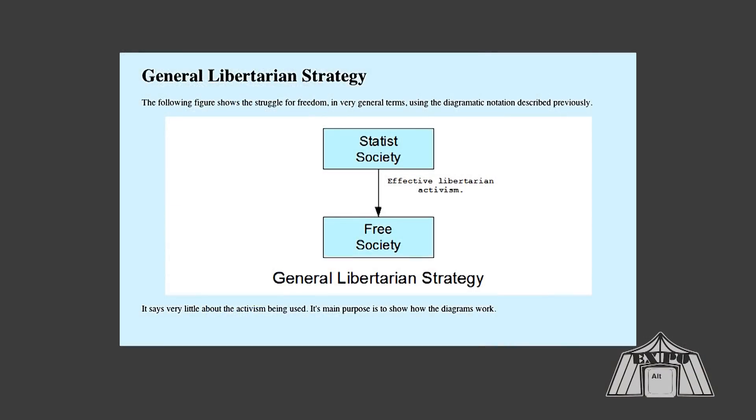So this is what the general libertarian strategy is. It's very simple. Two boxes, one arrow. You start with the state of society. You want to get to a free society. How do you get there? We call it effective libertarian activism. That's all it is. Now, the question is, what's the effect of libertarian activism?